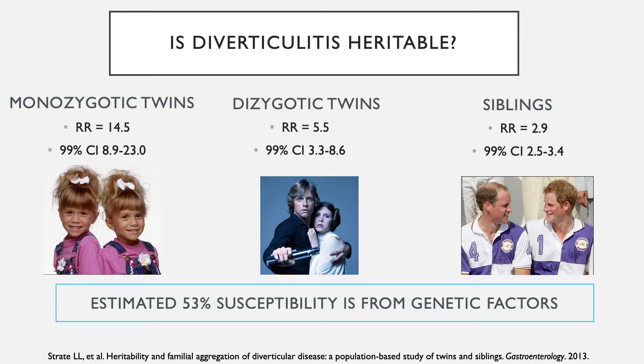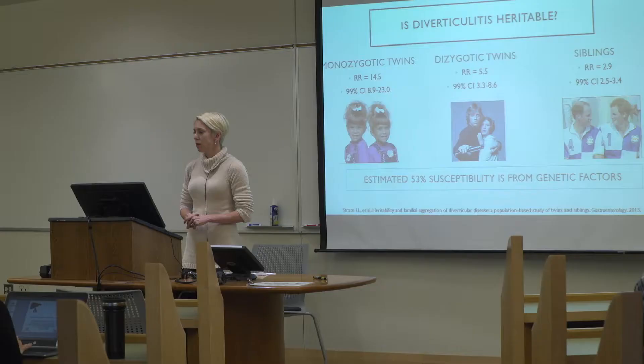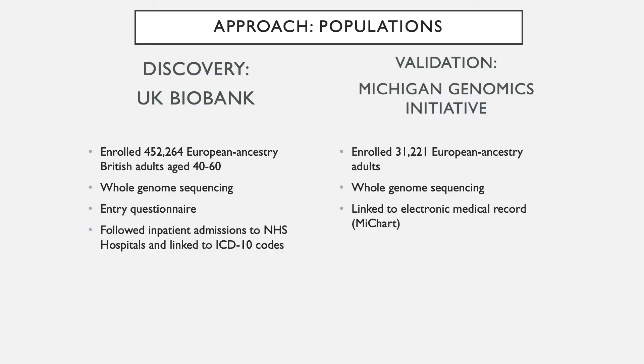Diverticulitis has long been thought of as a purely environmental disease — that Western populations eat a low-fiber diet, develop diverticular disease, and spontaneously develop diverticulitis. Therefore, the heritable aspect really hadn't been studied until about 2013, when well-designed twin studies indicated that perhaps 40 to 53 percent of our risk is due to genetics, and therefore we can think of diverticulitis as a complex trait.